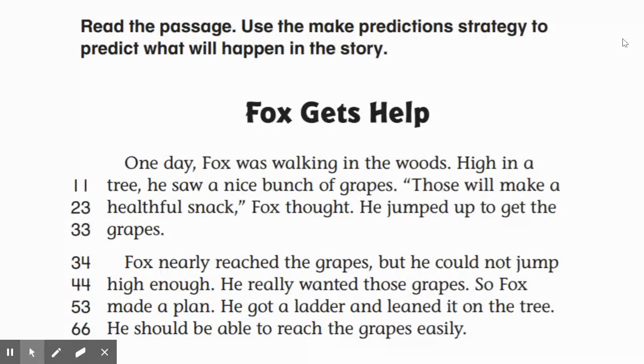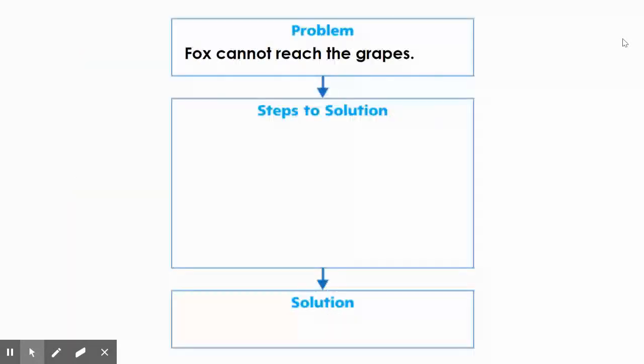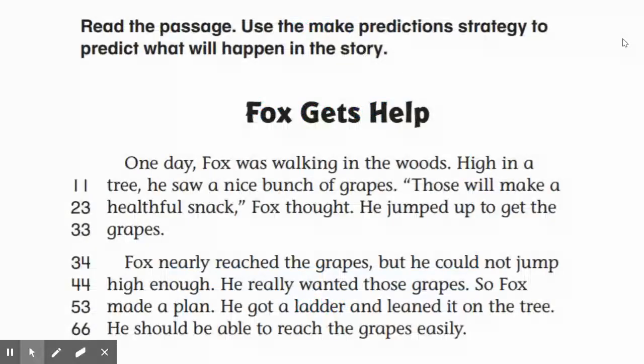All right, second graders, I'm going to stop and think. Did you all find the problem that Fox is having? What do you think the problem is? Hmm, you got it! I knew you could figure it out. The problem is Fox cannot reach the grapes. So now we have to start thinking about what is Fox going to do to solve his problem. And I think we just read that he went to get a ladder and he leaned it on the tree.